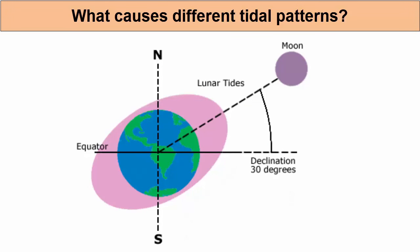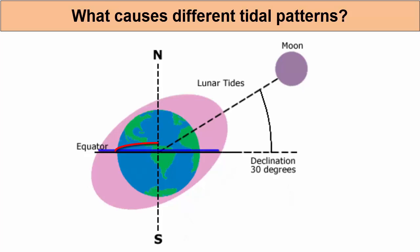How do we use the tidal bulge model to explain the variety of tidal patterns we find across the globe? This picture reminds us that while the Earth is orbiting the Sun and rotating through the lunar bulges, it is tilted at a 23.5 degree angle. So if we are at the equator, we will rotate through two bulges of roughly the same water level and experience semidiurnal tides.